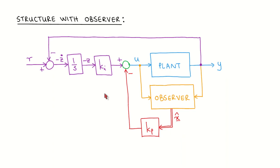To end this video, I want to make a comment about the integral control structure we used. Integral control can be slow to react to changes in the reference input. When there is a step in the reference input, the difference between the reference and output must be accumulated for a time period by the integrator before the integral state has a large enough value to influence the plant. To address this disadvantage, one can combine reference feed-forward with integral control. Reference feed-forward provides a fast but possibly inaccurate response to a change in reference input, and integral control adds a slower correction of the response.